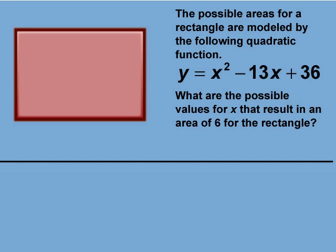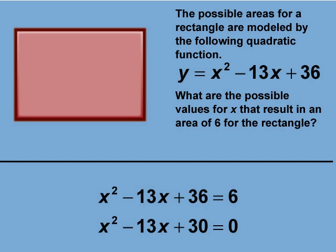We take the quadratic expression x squared minus 13x plus 36 and make it equal to 6, the area of the rectangle. We rewrite the equation to get this quadratic equation in standard form: x squared minus 13x plus 30 equals 0.